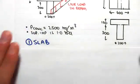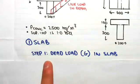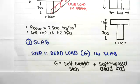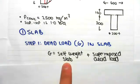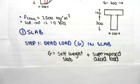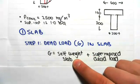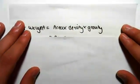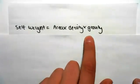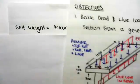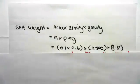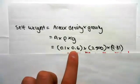The first thing we deal with is the slab. We're going to work out the dead load G in the slab. The dead load is comprised of the self-weight of the slab and the superimposed dead load. Dealing with self-weight first: the self-weight is area times density times gravity. The area is 0.1 by 0.6, working in meters and kilograms throughout.